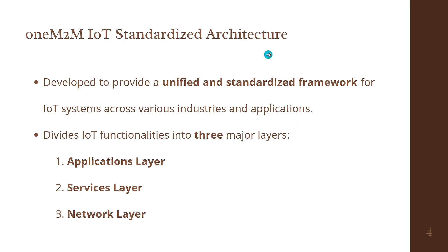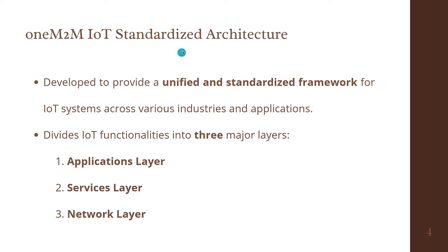Let's look at the first architecture: One M2M IoT standardized architecture. It is developed to provide a unified and standardized framework for IoT systems across various industries and applications. It divides IoT functionalities into three major layers.